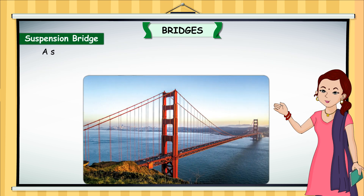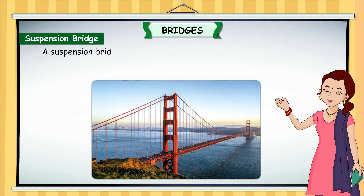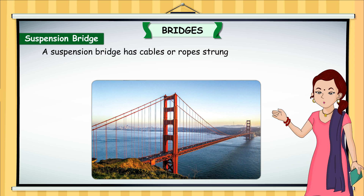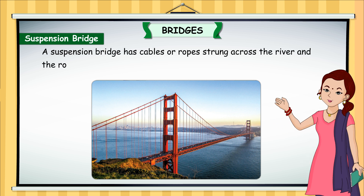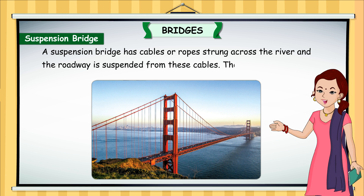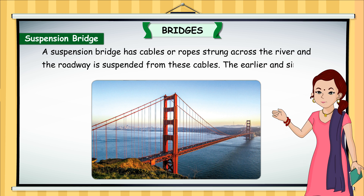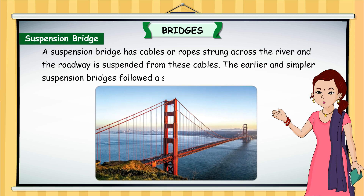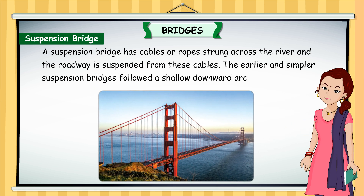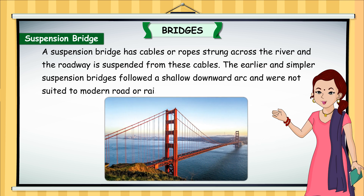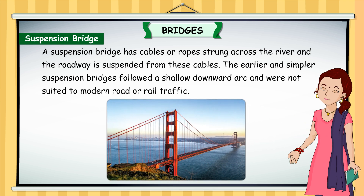A suspension bridge has cables or ropes strung across the river and the roadway is suspended from these cables. The earlier and simpler suspension bridges followed a shallow downward arc and were not suited to modern road or rail traffic.